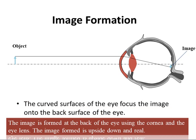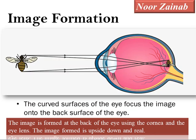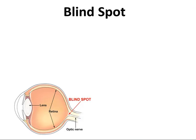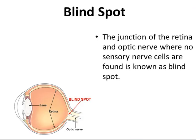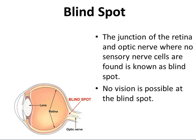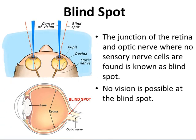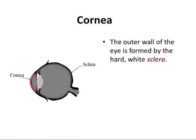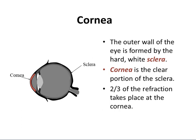The retina receives the image that the cornea focuses through the eye's internal lens and transforms it into electrical impulses carried by the optic nerve to the brain. The curved surfaces of the eye focus the image onto the back surface of the eye, and the image formed using the cornea and eye lens is upside down and real. The junction of the retina and optic nerve where no sensory nerve cells are found is known as the blind spot, and no vision is possible there. The outer wall of the eye is formed by the hard white sclera, and the cornea is a clear portion of the sclera. Two-thirds of the refraction takes place at the cornea.